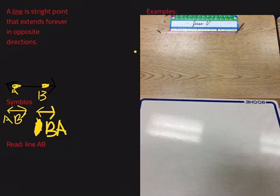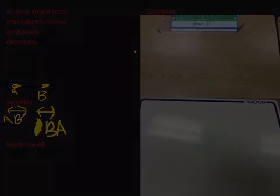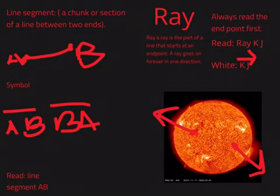A line is a straight path that extends forever in opposite directions. A line segment is a chunk or section of a line between two ends.